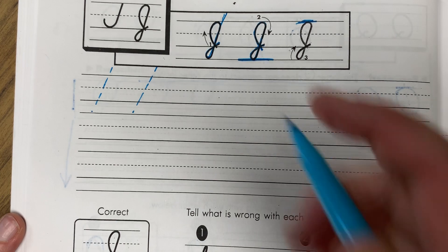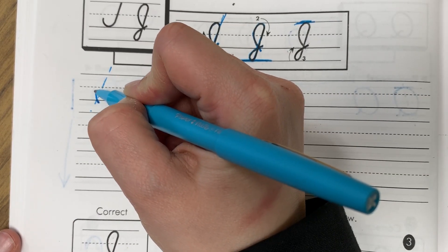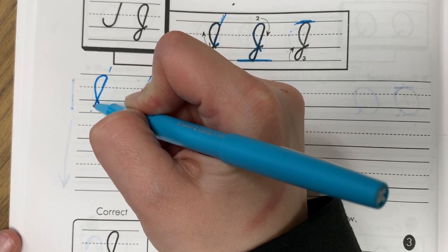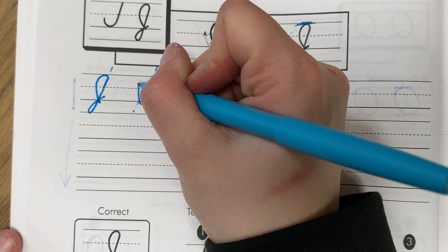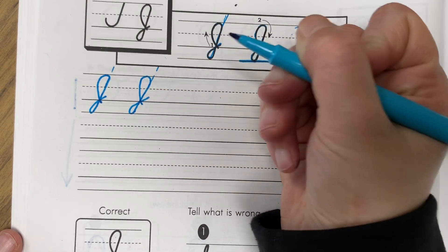So let me show you it right here. So I start just below that line. I make my loop at the top. I come back down, I loop around and go like that. So here, around, down, and back through.